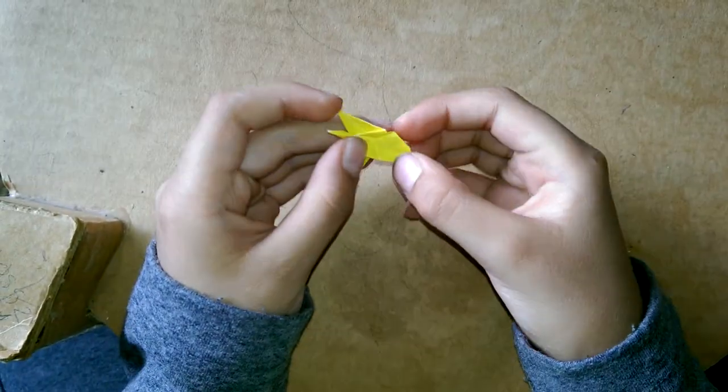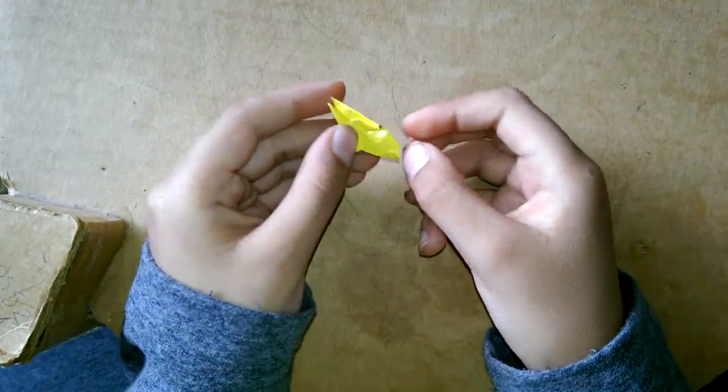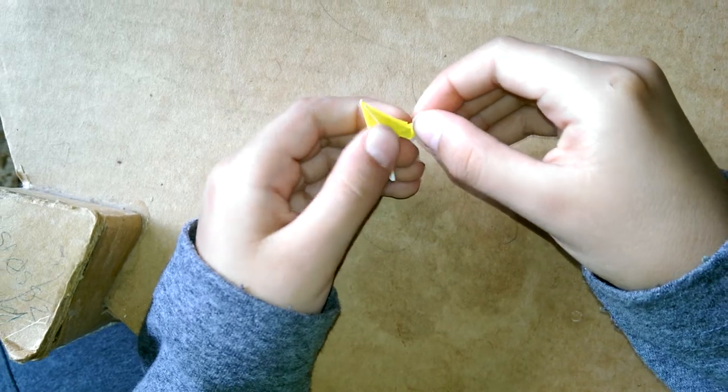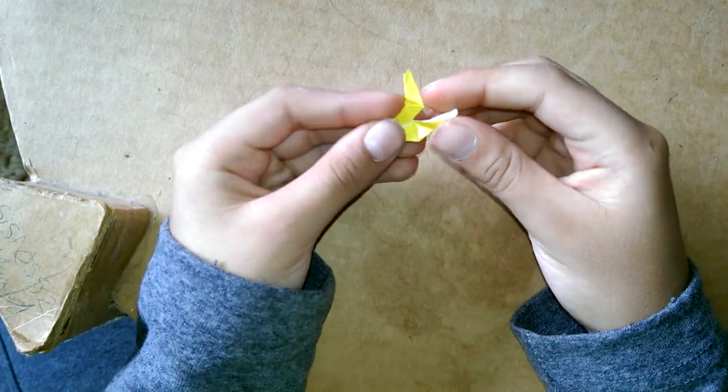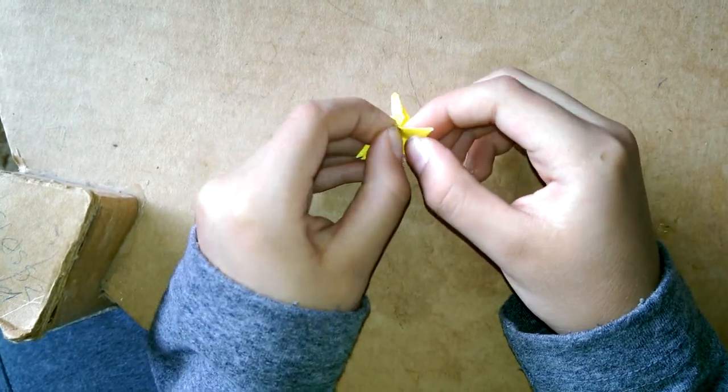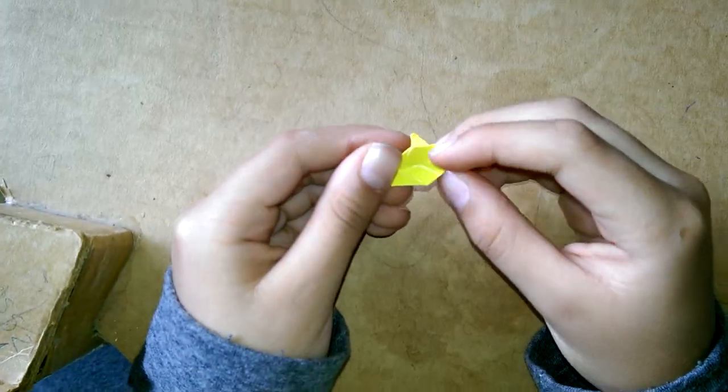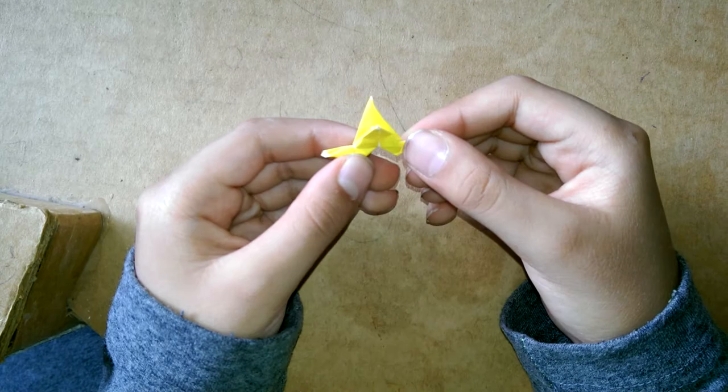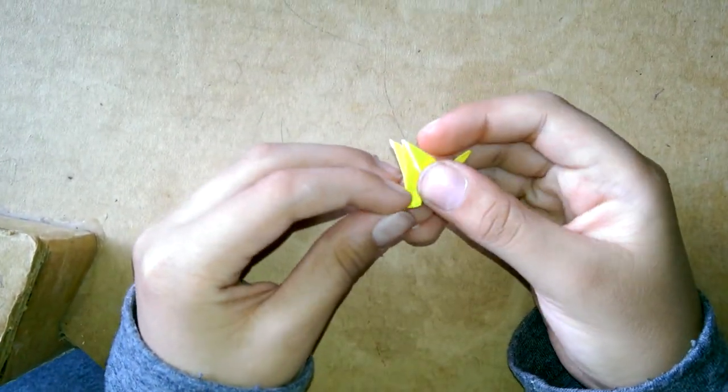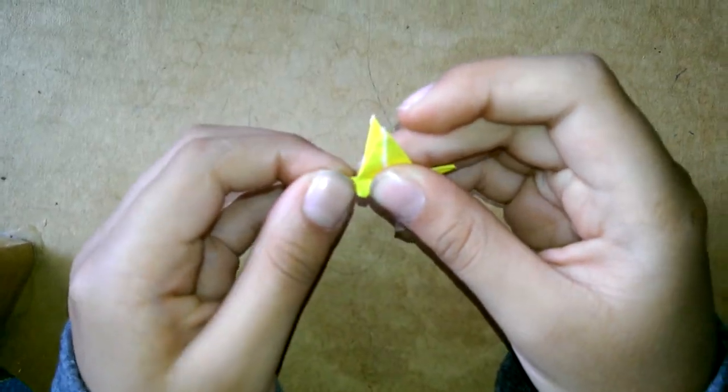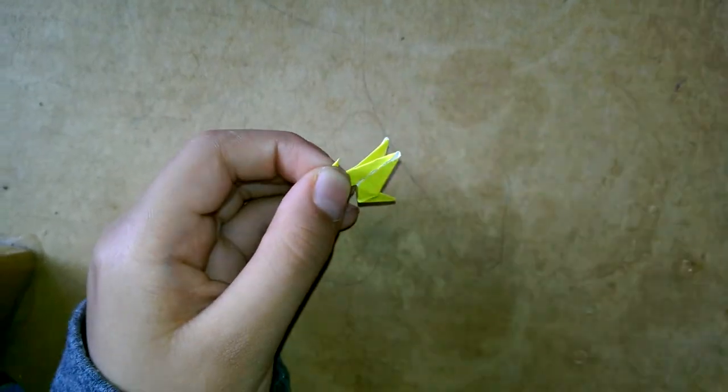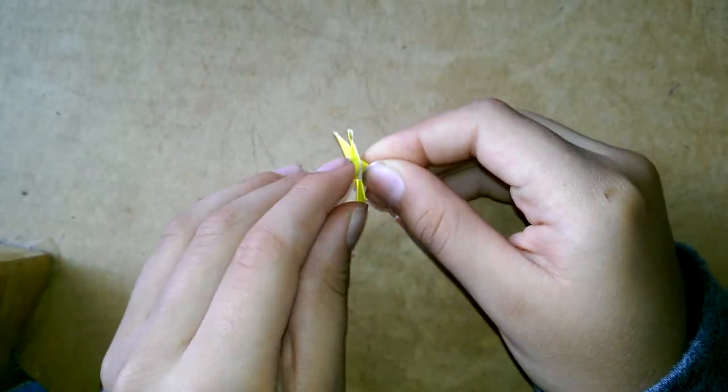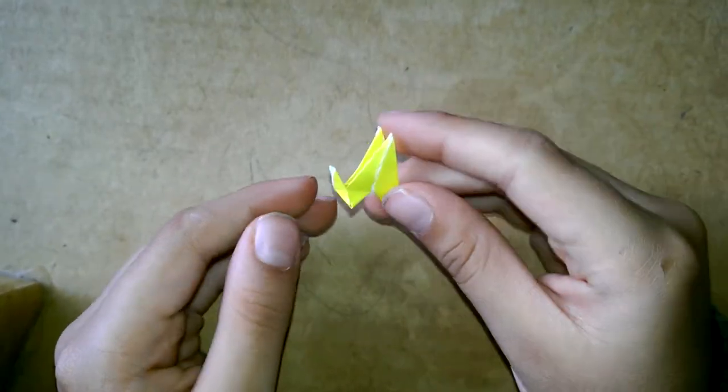We open that, see that fold, we fold it there and then we adjust it after we fold it down and we do the same to the other side. Then we fold it up on that little line. Just like that. And then we're going to open that, fold that fold and then we do it to the other side and it kind of closes in.